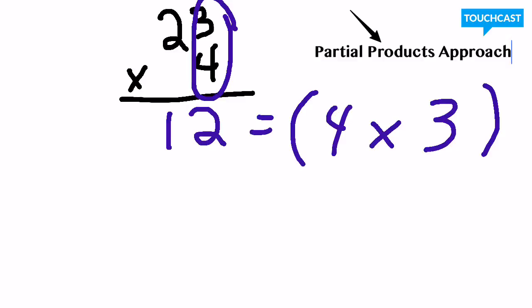Now next, this is where it can get tricky, but follow along with me. Next what I'm going to do is I'm going to go to this tens place and multiply my 4 times my tens place which is 20.